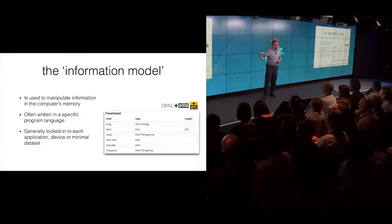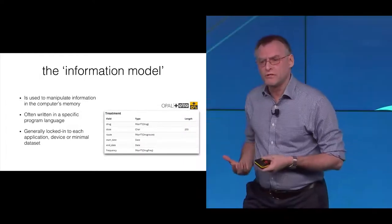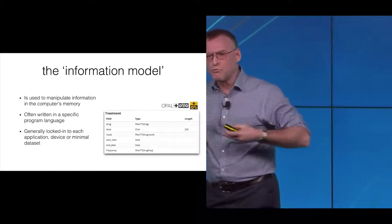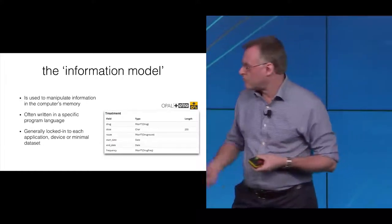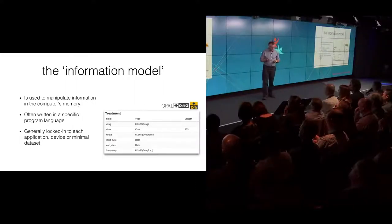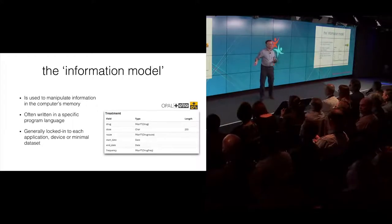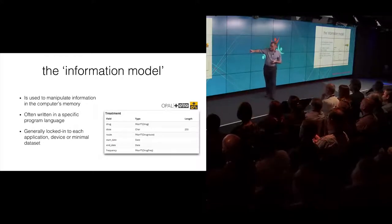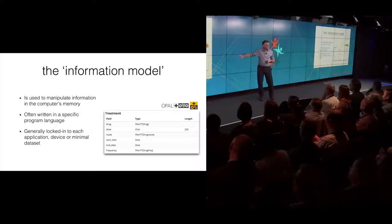In a more technical sense, the information model is generally used to manipulate information inside the computer's memory — it's the working memory space for computability. It's often written in a specific programming language and locked into a particular application or device. And I know there's at least one person here who will recognize this little bit of information model — part of the Opulse system, nicely documented in open source.